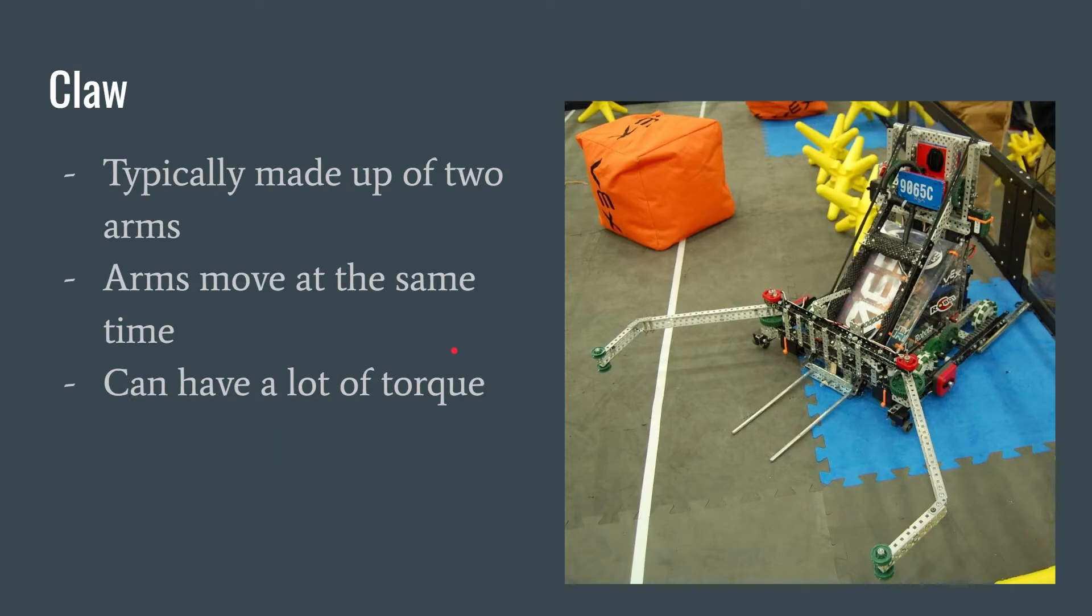To start off, we'll have a claw. It's composed of two arms, either moving parallel to the ground like a claw in a trash truck or perpendicular to the ground like the claw in a claw machine. Typically, the arms are geared together to move inwards at the same speed at the same time, using one to two motors to power, depending on the weight of the object being lifted and the torque that you need. They also tend to funnel the game object into the robot and hold it tight until the operator is ready to release the game object.